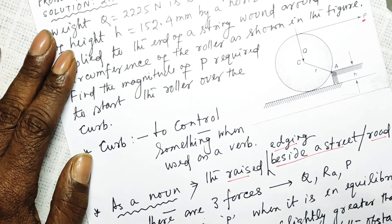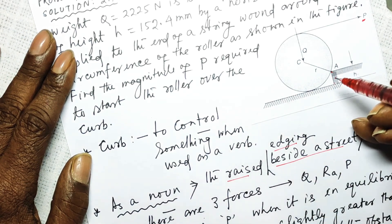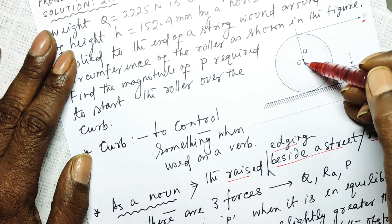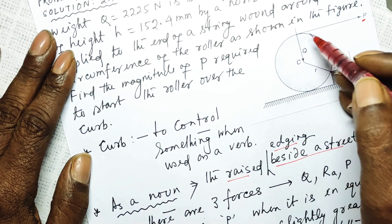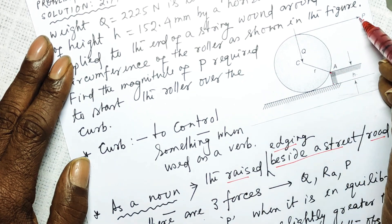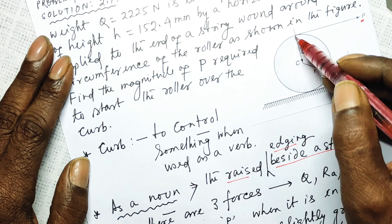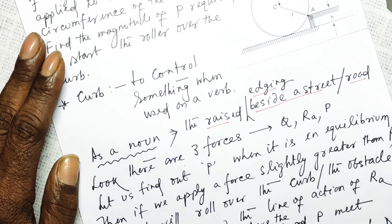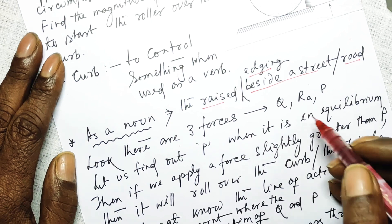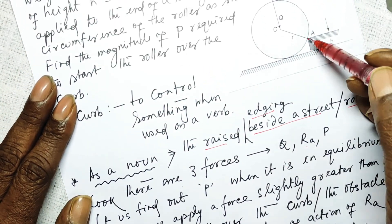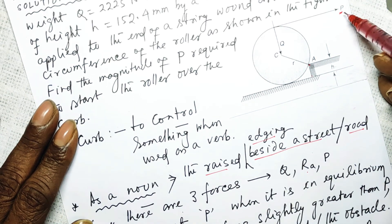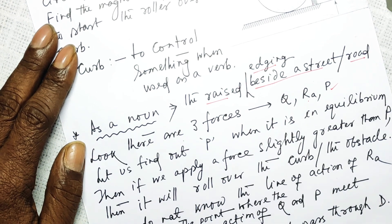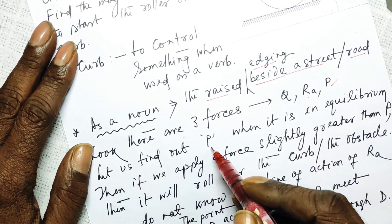Looking at the free body diagram, there are three forces: a reaction force from the contact point A, the weight Q acting vertically downward from the center of mass, and the applied force P applied to the one end of the rope going around this roller. So there are three forces: the reaction force RA at the point of contact A, and the applied force P which is to be found out.